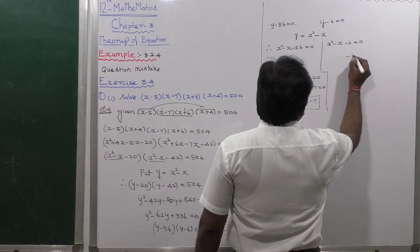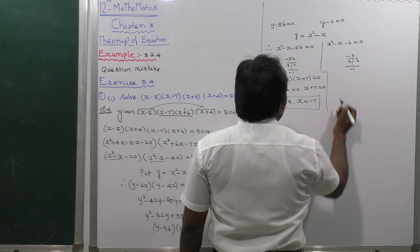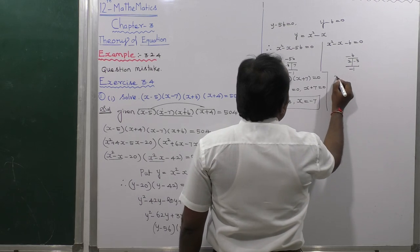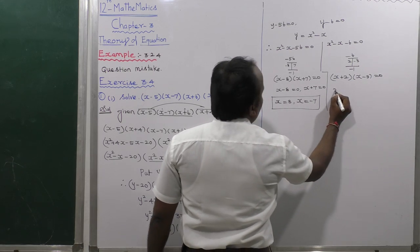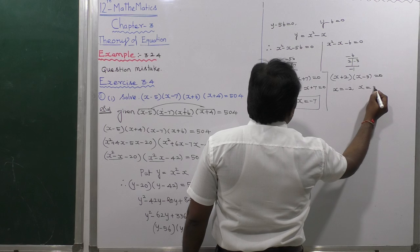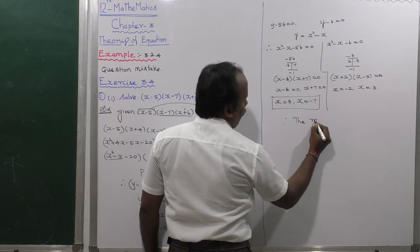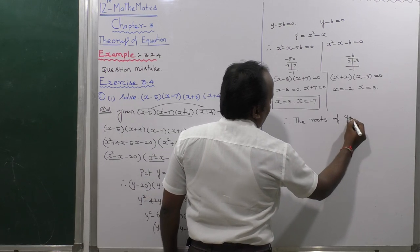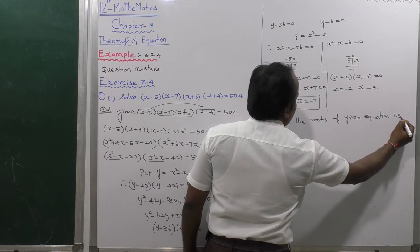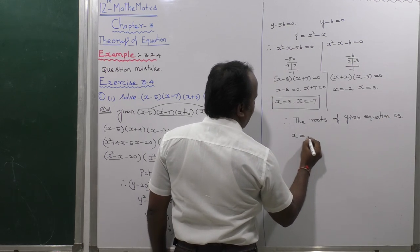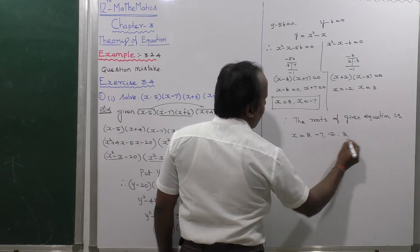From the second factor: y minus 6 equals 0, so y equals 6. Then x squared minus x minus 6 equals 0. Product is minus 6 and sum is minus 1, so factors are minus 3 and 2: (x plus 2)(x minus 3) equals 0, giving x equals minus 2 or x equals 3. Therefore, the four roots of the given equation are x equals 8, minus 7, minus 2, and 3.